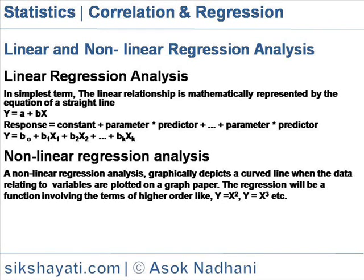A linear equation is constructed by adding the results for each term. That is, response = constant + (parameter × predictor) + ... That is, y = b0 + b1x1 + b2x2 + ... + bnxn. If two variables have a linear relationship, a change in the value of the independent variable by one unit causes a constant change in the values of the dependent variable.